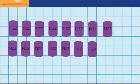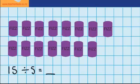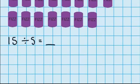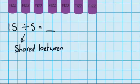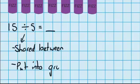I can record that like this: 15 cans put into groups of 5, and I'm working out how many groups there will be. You might remember in our last lesson that we said the divided by sign means shared between. But it can also mean put into groups of, and that's what this lesson is going to be about today.